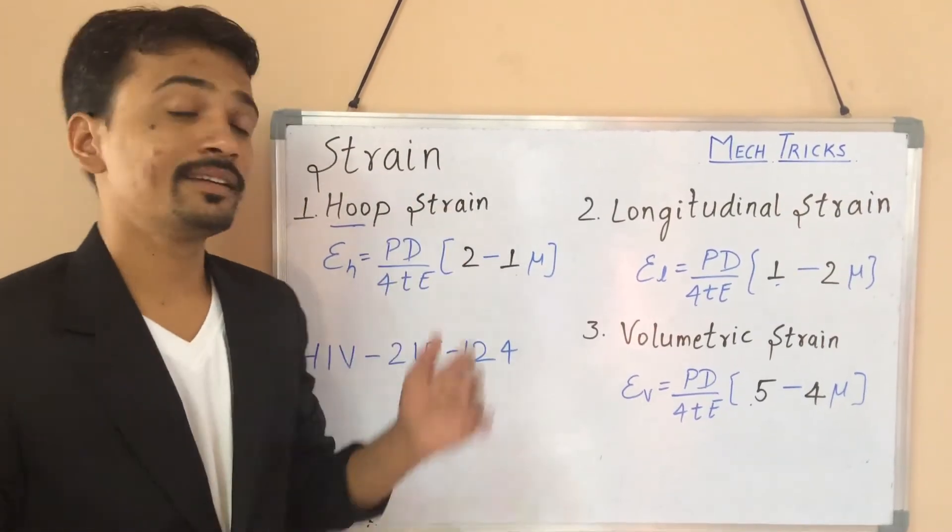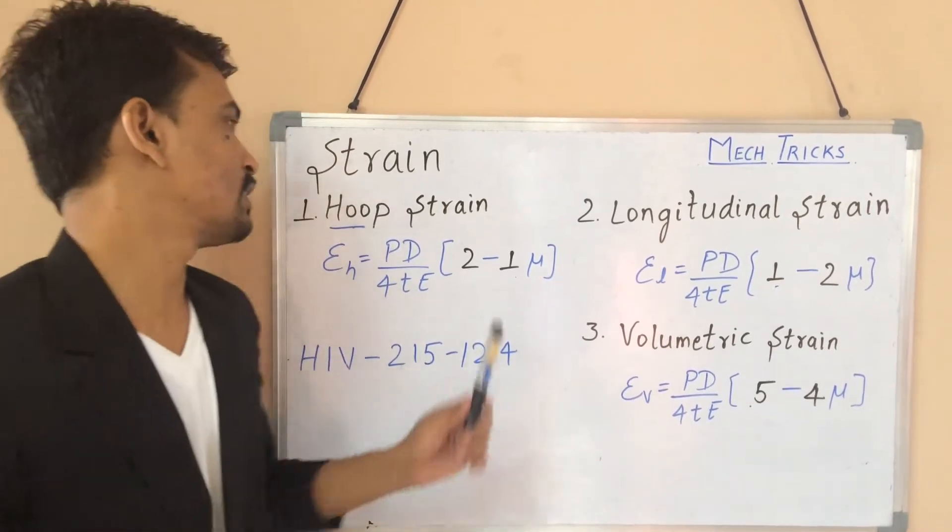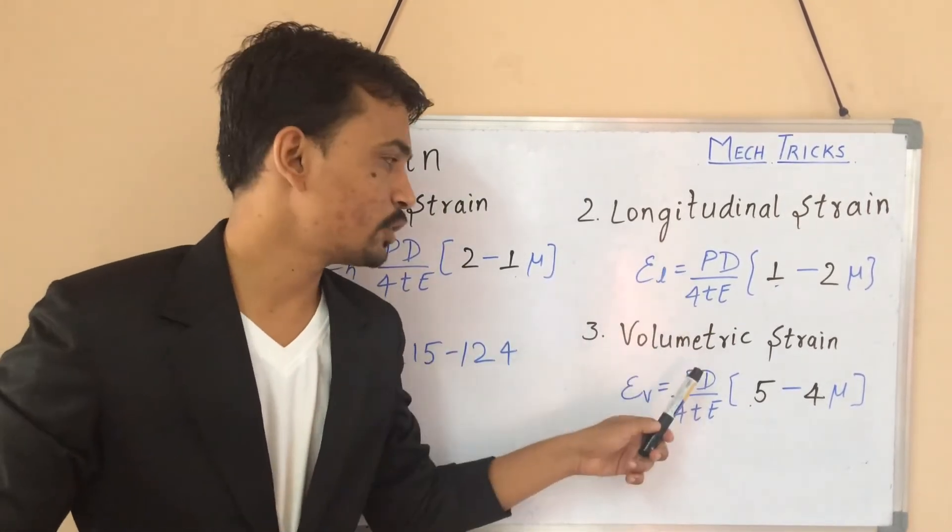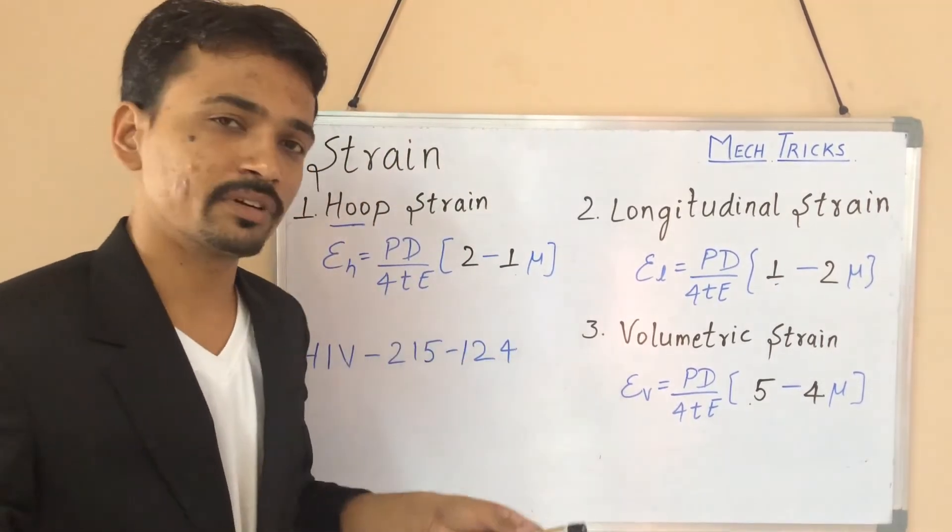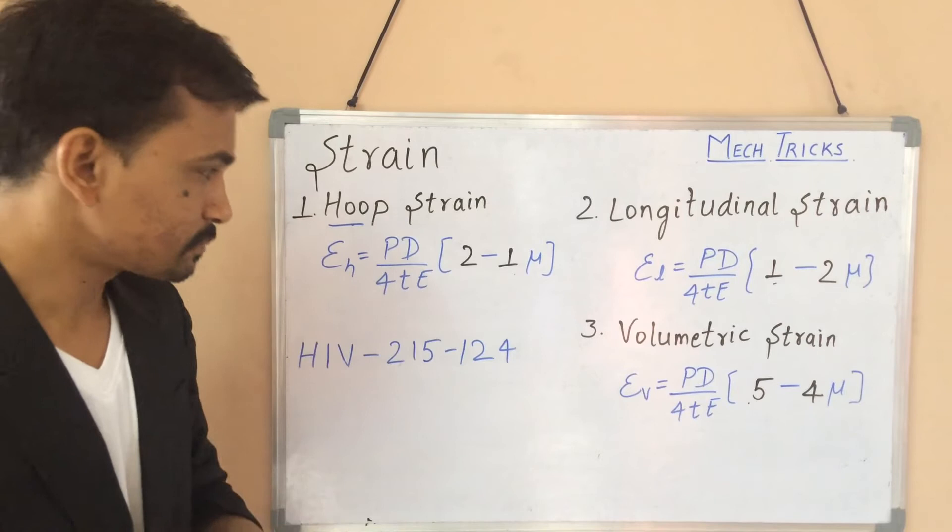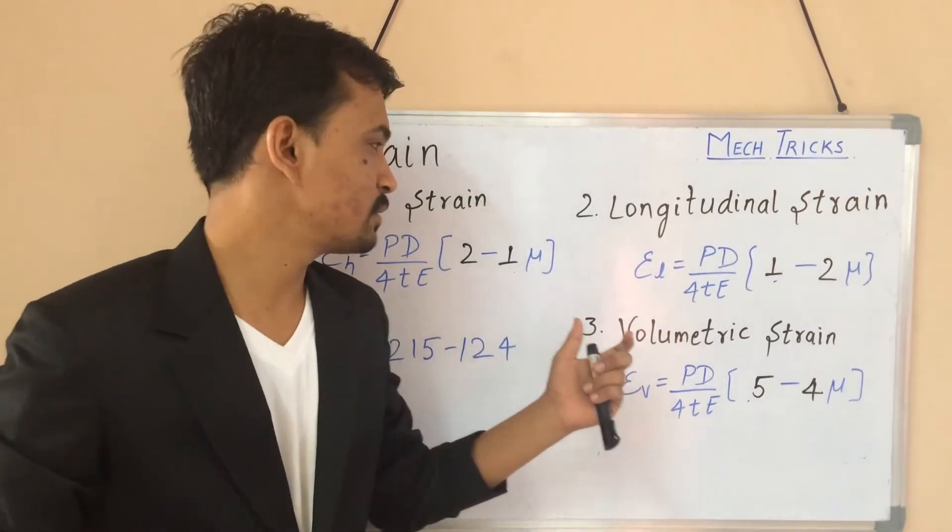Let's come to the strain. There are three types of strain produced in a thin cylinder: hoop strain, longitudinal strain, and volumetric strain. I have written the formulas below these things. And we can see easily there is a lot of similarities between the formulas.